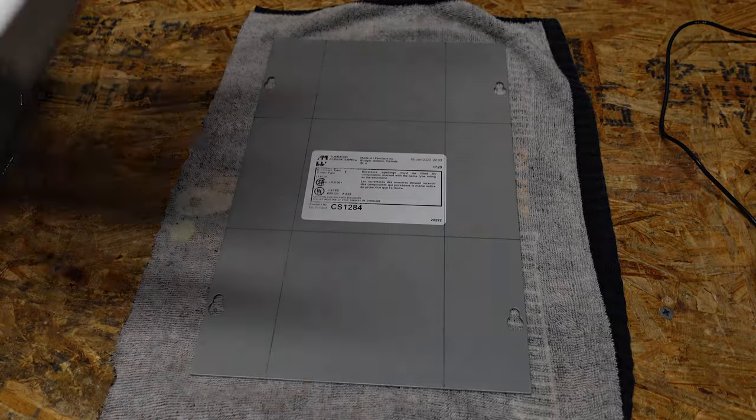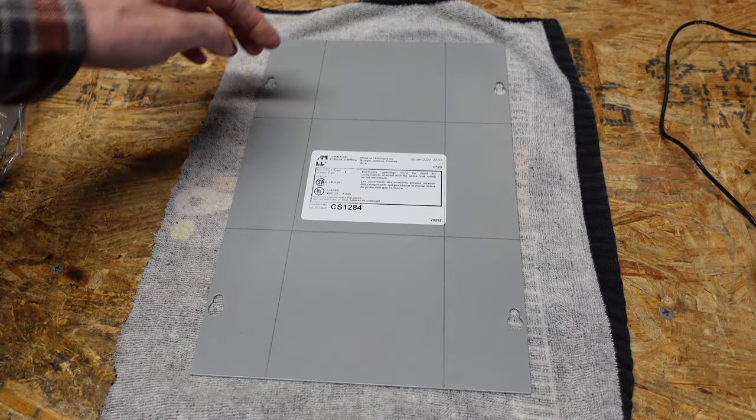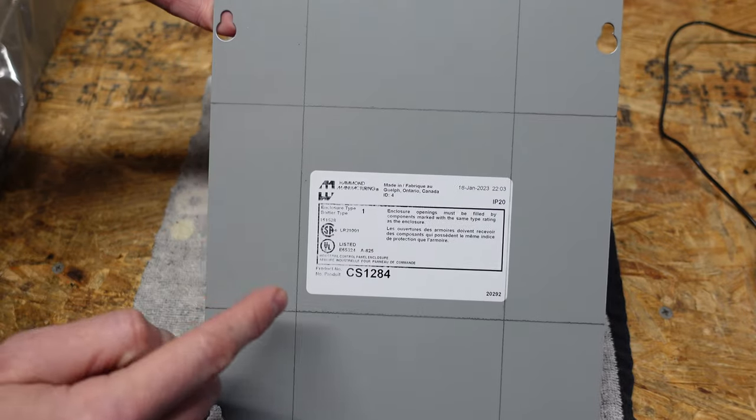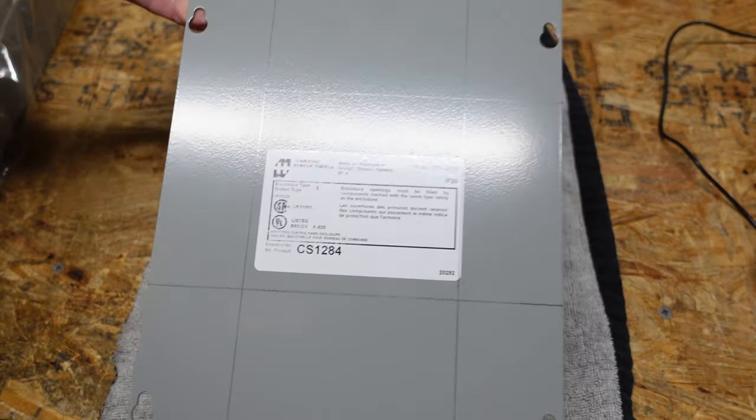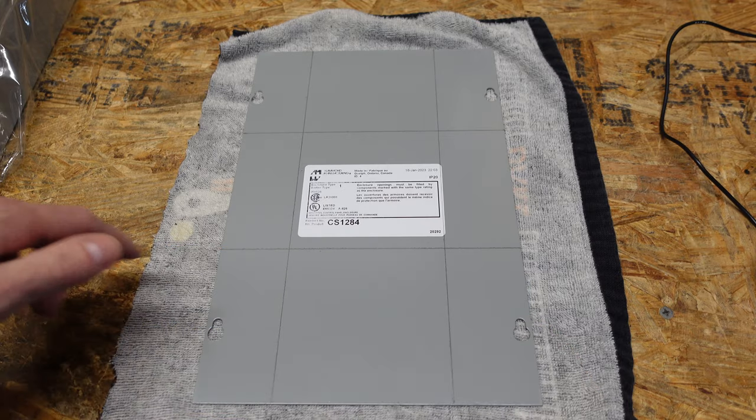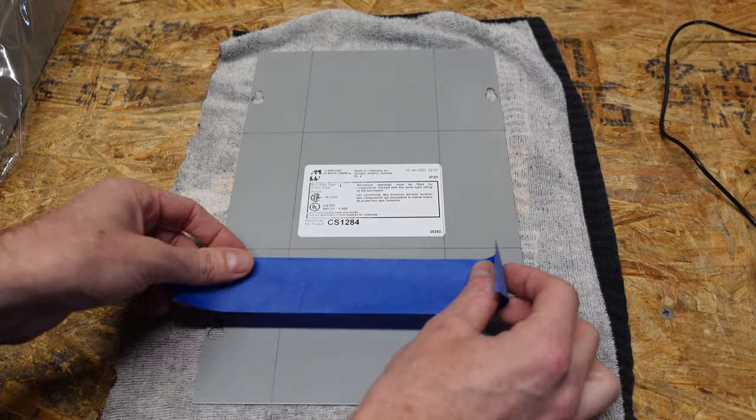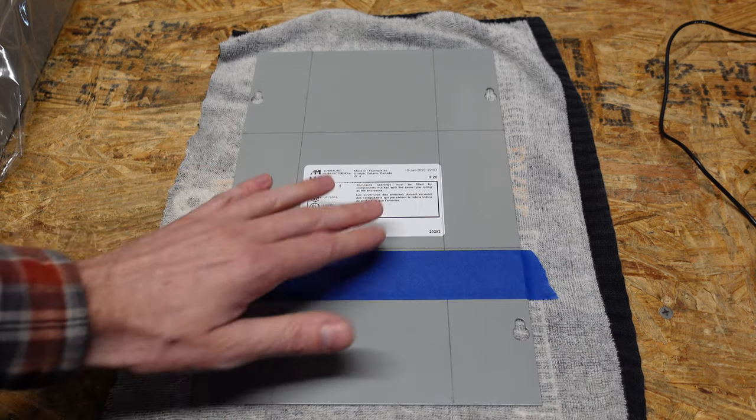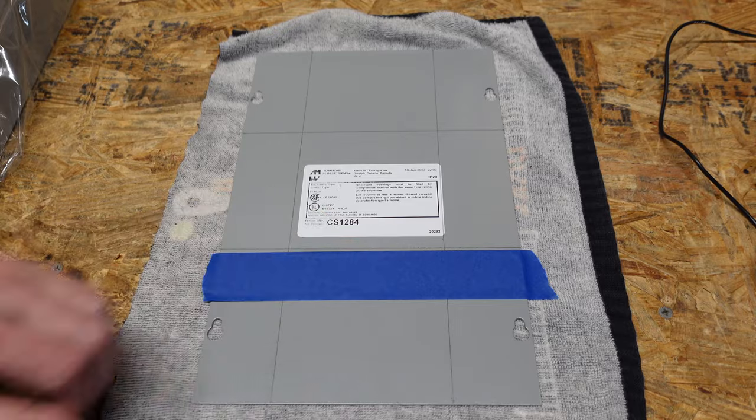So using your basic straight edge here I've just connected all of those points that I measured and you see I now have an exact square here that I need to cut out for this breaker face plate to fit. So up next I'm going to mask all of the areas around the square with some basic painter's tape and that's just going to prevent the tool we're going to use from damaging the outside around the area.